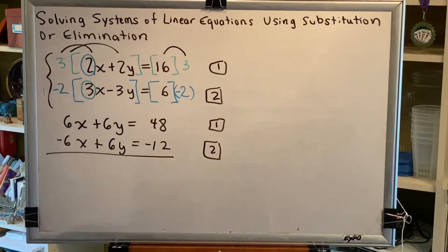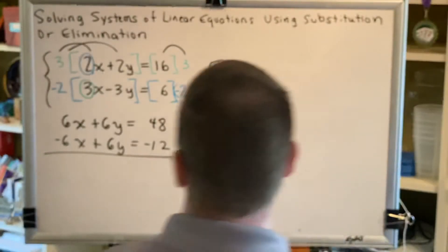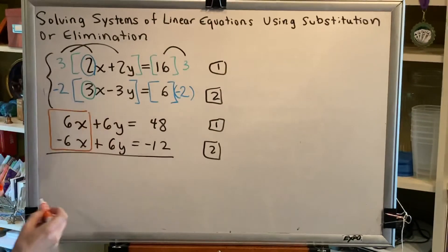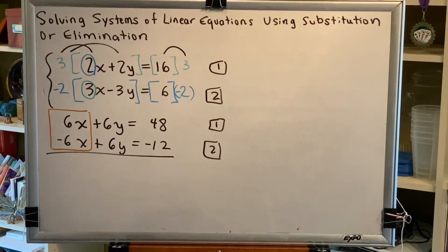And look what we've achieved. Our goal was to create opposites for x, and we have done so. In the top equation, the x term is positive 6x, and in the bottom equation, the x term is negative 6x.